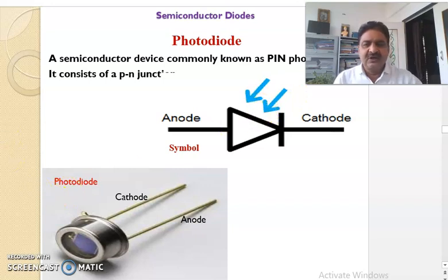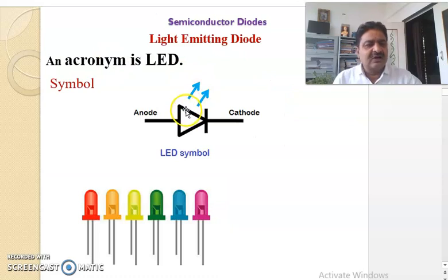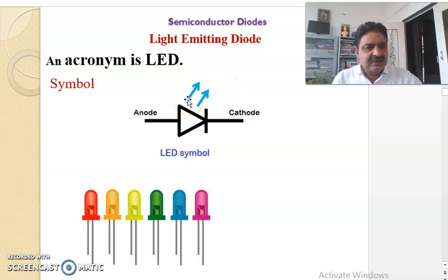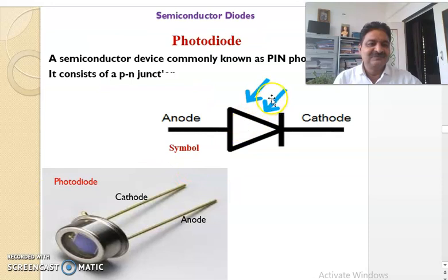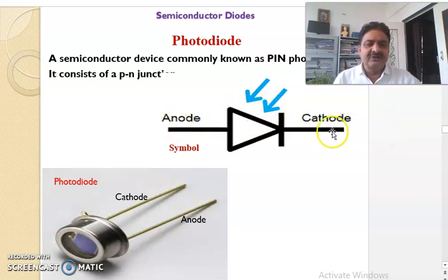In the case of the light emitting diode, these arrows are outward — outside. In LED, light is emitting, that's why arrows are outside. And in the case of photodiode, light is incident. As usual, this electrode is the anode and this one is the cathode. This is the symbol of photodiode.